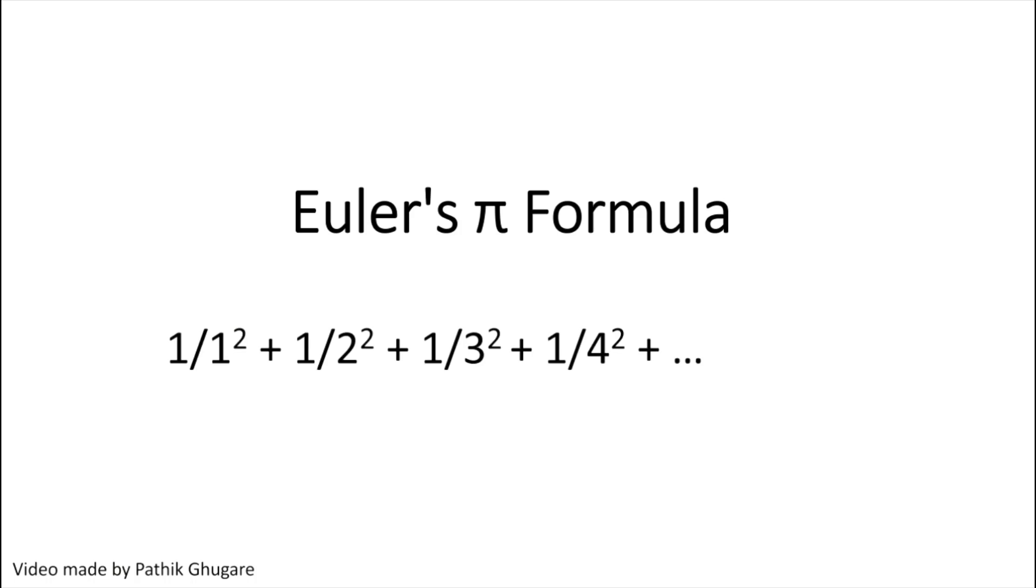Euler's pi formula: Euler managed to prove that if you add reciprocals of squares of natural numbers till infinity, then you will get pi squared divided by 6. Pretty, isn't it? We know that pi is somehow related to circle, but here you won't see any circle directly. If you want to see its direct relation to circle, I will link down 3Blue1Brown's video in the description.